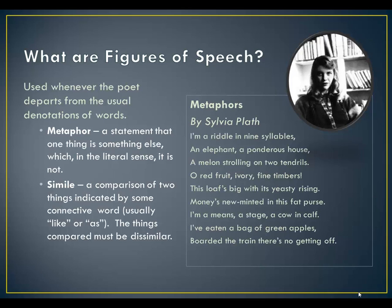I'm a riddle in nine syllables, an elephant, a ponderous house, a melon strolling on two tendrils. Oh, red fruit, ivory fine timbers, this slope's big with its yeasty rising. Money is new minted in this fat purse. I'm a means, a stage, a cow and calf. I've eaten a bag of green apples, boarded the train. There's no getting off. So if you look at each of these, each of them are a metaphor for being pregnant, and she's playing with the whole idea throughout this poem.